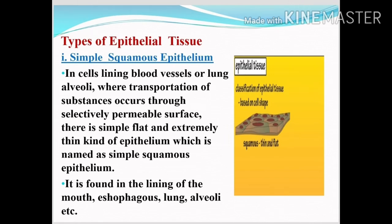Epithelial tissue is basically of four types: simple squamous epithelial tissue, stratified squamous epithelial tissue, cuboidal, and columnar epithelial tissue. Simple squamous epithelial tissues are present in the blood vessels and inside the lungs in the alveoli — where there is a need for a selectively permeable surface for transportation. These tissues are present as simple, flat, and extremely thin epithelial tissues.